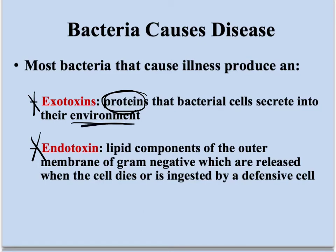Their environment is us — we are their environment because they're infecting us. Endotoxins are lipid components of the outer membrane of gram-negative bacteria. Gram-negative stains pink, which means they have less peptidoglycan. These lipid components are released when the cell dies or is ingested by a defensive cell, like a white blood cell. White blood cells cruise around our bodies and eat any bacteria they find.